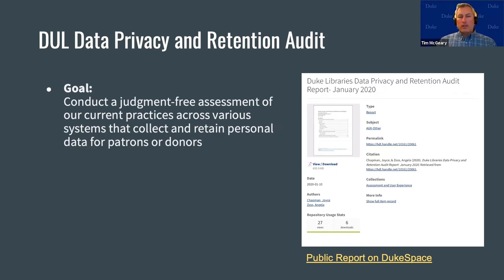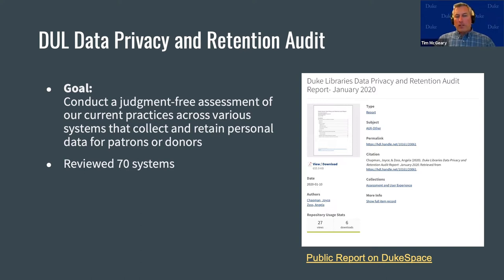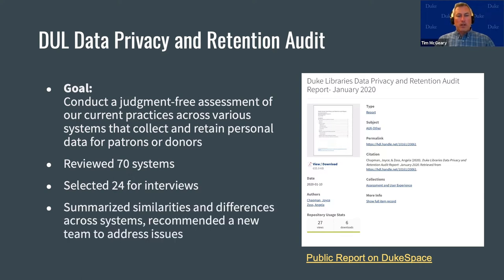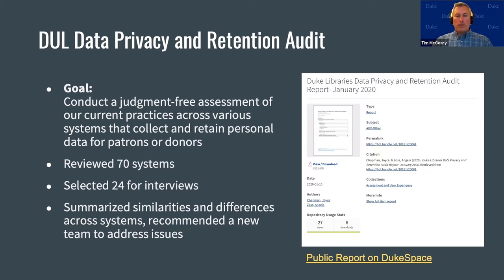The goal was to collect a judgment-free assessment of our current practices across various systems that collect and retain personal data for patrons and donors. We collected and identified 70 systems that might be candidates for such an audit, and selected 24 for interviews because they were confirmed to collect and retain personal data. The resulting report, linked in our slides, summarizes similarities and differences across the systems and ultimately concludes there are enough issues to warrant the creation of a new team to address them.